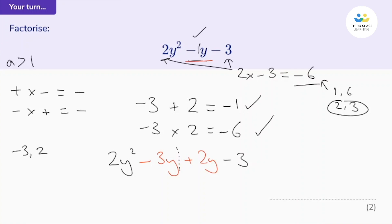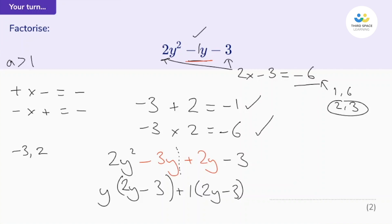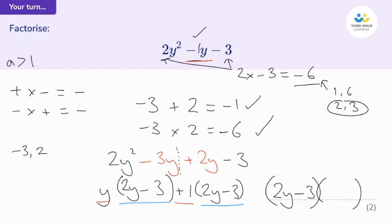Let's rewrite the middle term of our original expression. It was negative 1y — now it's going to be negative 3y plus 2y, and there is a negative 3 on the end. Let's split it right down the middle. Fully factorising the left-hand side: I can see a y in common, which means in the bracket we're going to have 2y subtract 3. Factorising the right-hand side: I can't see anything in common with those terms, but we can always bring out a factor of 1 — so let's bring out a positive 1, giving us 2y take away 3 in the bracket. Great news: we've got 2y take away 3 in both brackets, so we can factorise the whole expression one more time. Bring out the 2y take away 3, and in the other bracket we have y plus 1. And there it is, fully factorised.